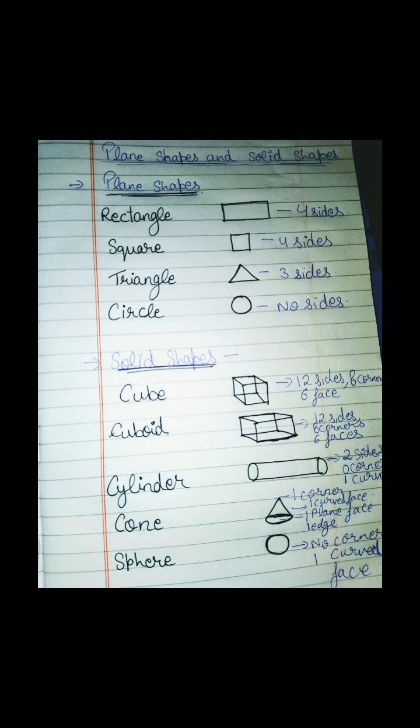Now let's see what are plane shapes. Plane shapes are rectangle, square, triangle and circles. These are plane or flat shapes.